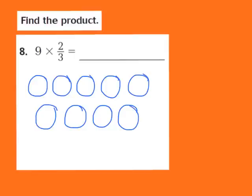Now that we have our 9 circles drawn, we're going to go back to our fraction. The denominator is a 3, so that means I now need to divide each one of my 9 circles into 3 parts. So all 9 circles are now divided into 3 parts. Our next step: the numerator is a 2, so what that tells me is I now need to shade in 2 of my 3 parts for each of my circles.